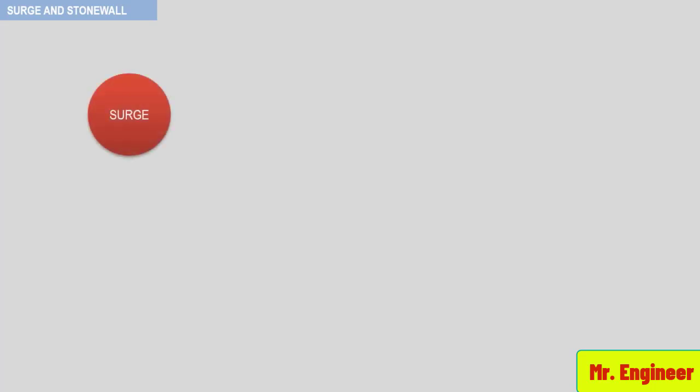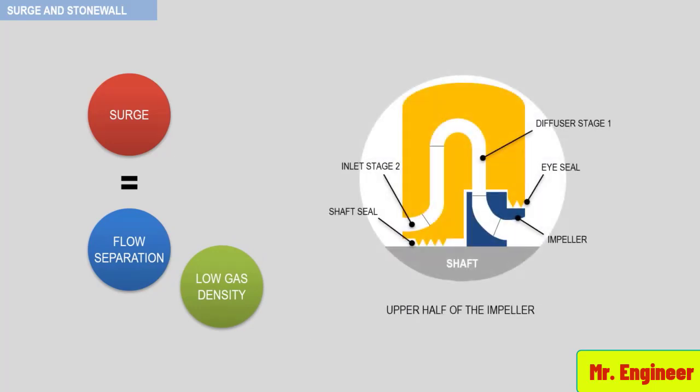Surge is a process system phenomena that is the result of flow separation caused by low gas velocity anywhere in a compressor stage: in the inlet guide vane, the impeller section, the impeller midsection, or the impeller discharge or diffuser.